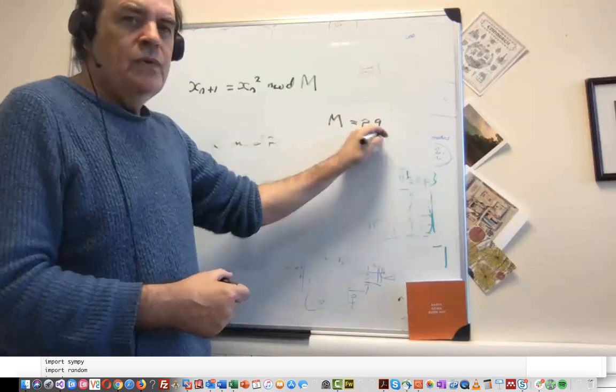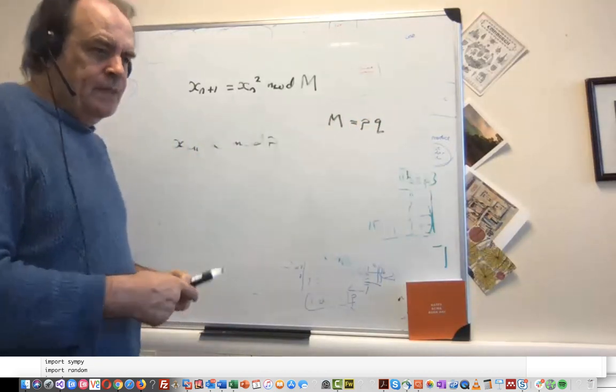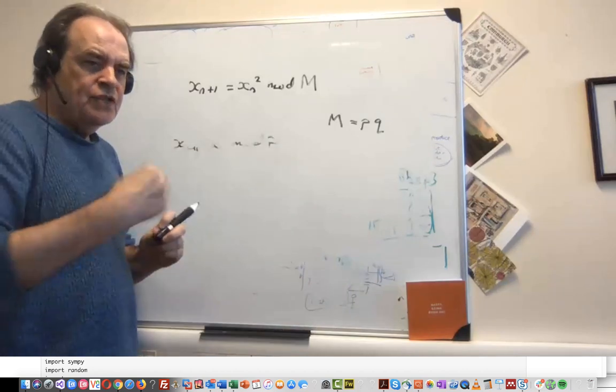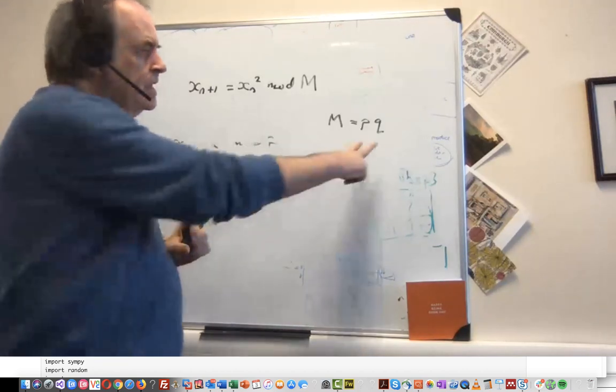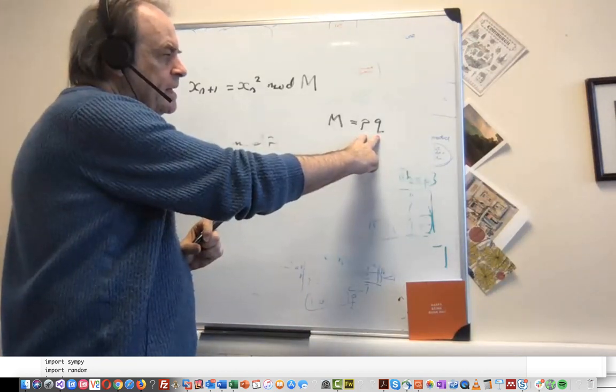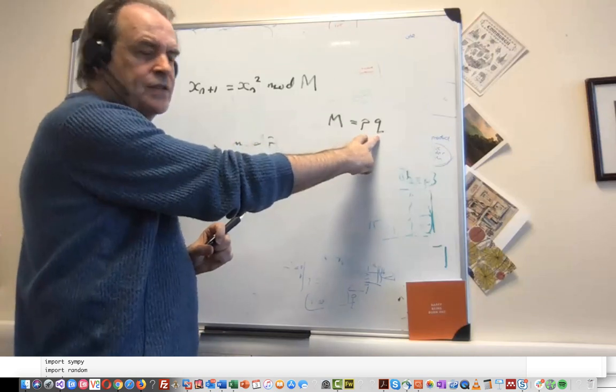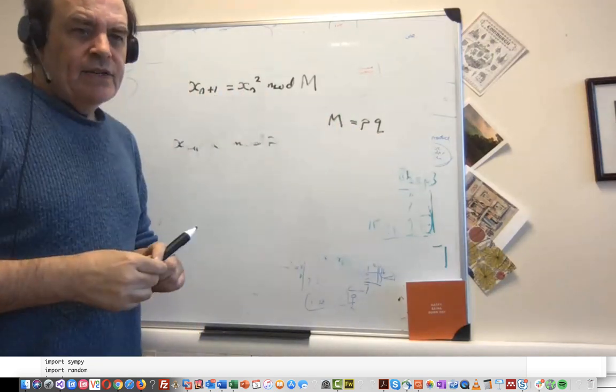The security of the method in generating these random numbers is to do with the difficulty in factorizing m back to p and q.